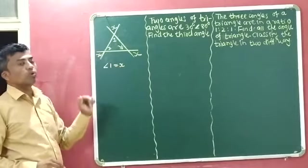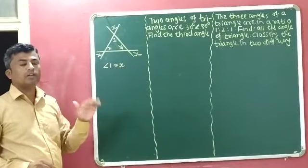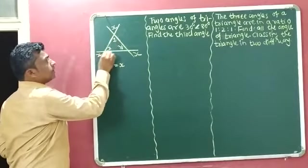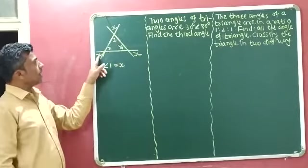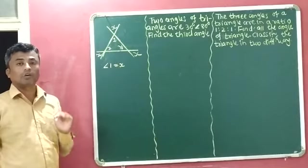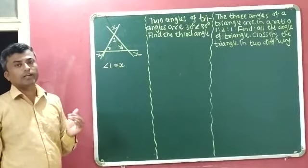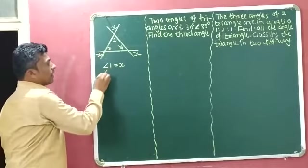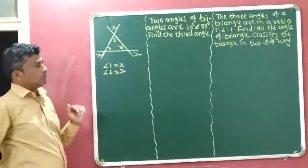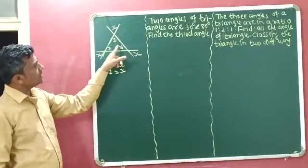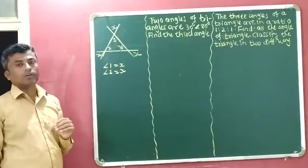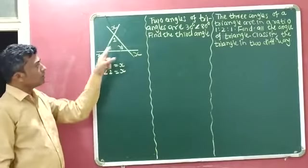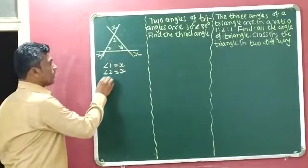Similarly, x and angle 2 are both vertically opposite angles, because these two lines intersect at one point. We know that vertically opposite angles are equal, so angle 2 is equal to x. In the same way, x and y are also vertically opposite angles, so y is equal to x.